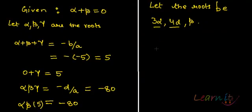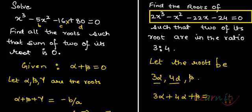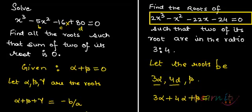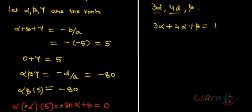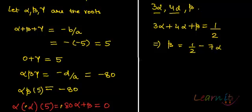With these roots, the sum of the roots equals -b/a = 1/2. So 3α + 4α + β = 1/2, which gives 7α + β = 1/2, and therefore β = 1/2 - 7α.